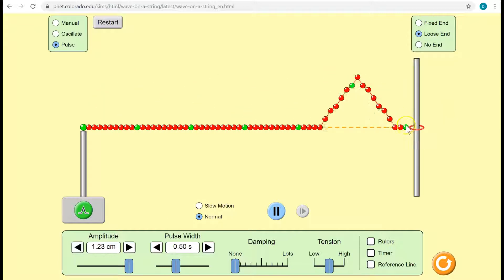For a free end, where the particle at the end can move, they don't invert. The wave stays on the same side as it reflects, stays on the top side.